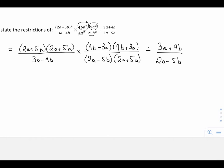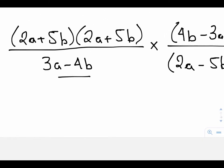And we are now going to look at the restrictions. We're going to start off with the first denominator here. I have 3a minus 4b. This means that 3a cannot equal 4b. So there's our first restriction.